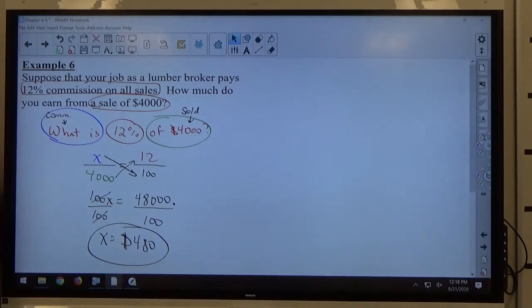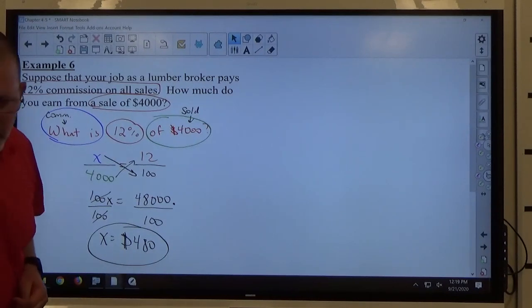Again, I get 12% of my sale. 12% of my sales, $480. You sell, you buy that, I get 480. The company gets 3,520. You get your $4,000 item. Everybody's happy. And life goes on.